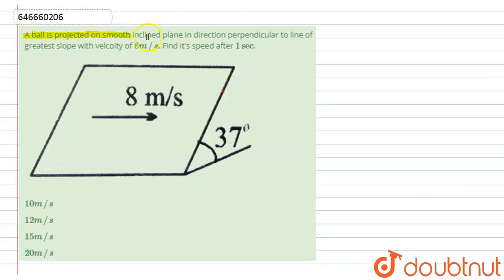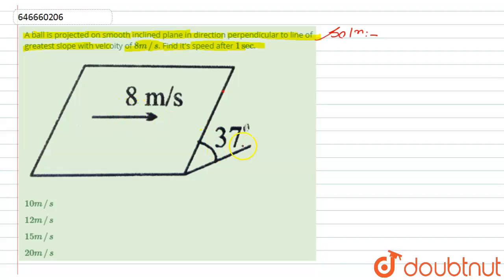The question is: a ball is projected on a smooth inclined plane in a direction perpendicular to the line of greatest slope with a velocity of 8 meters per second. Find the speed after one second. The inclined plane is at an angle of 37 degrees.